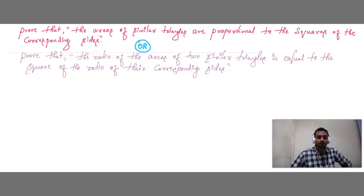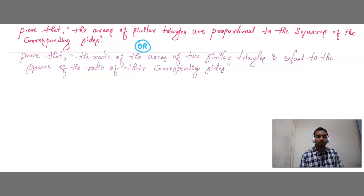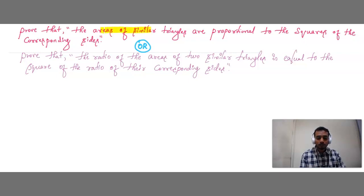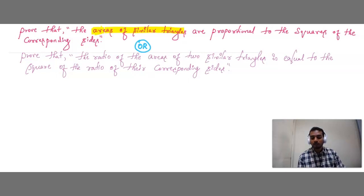This theorem is very, very important — do not forget it. Let me start solving the theorem. The statement is: Prove that the areas of similar triangles are proportional to the squares of the corresponding sides. The key terminology you need to remember is 'Areas of similar triangles' and 'Squares of the corresponding sides.'